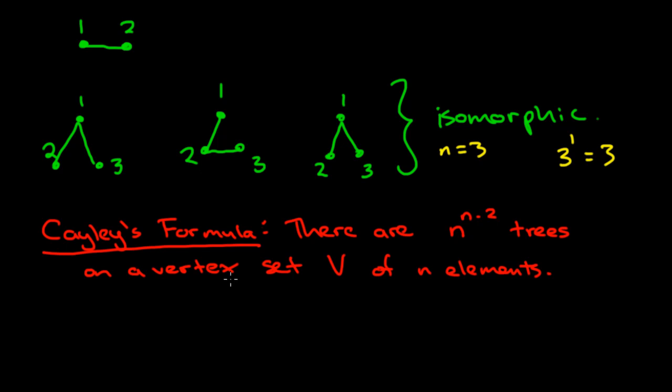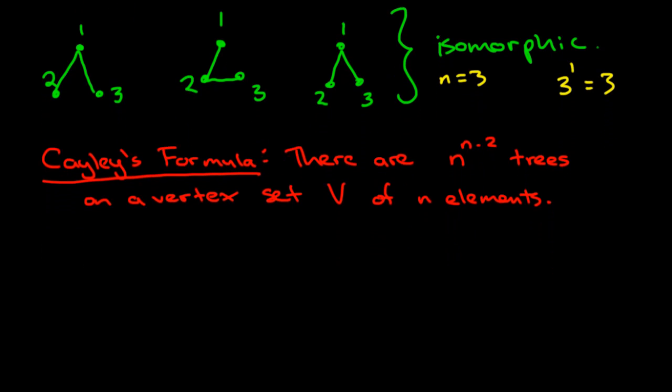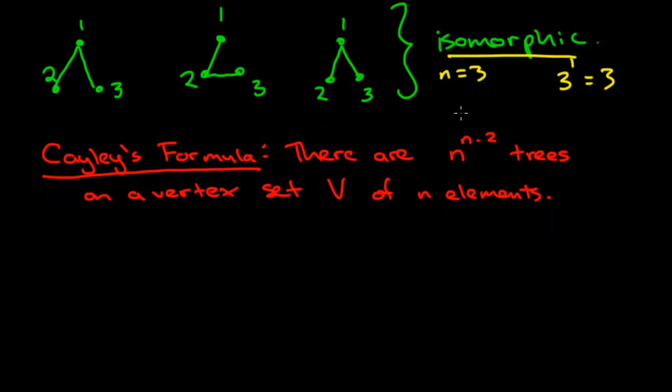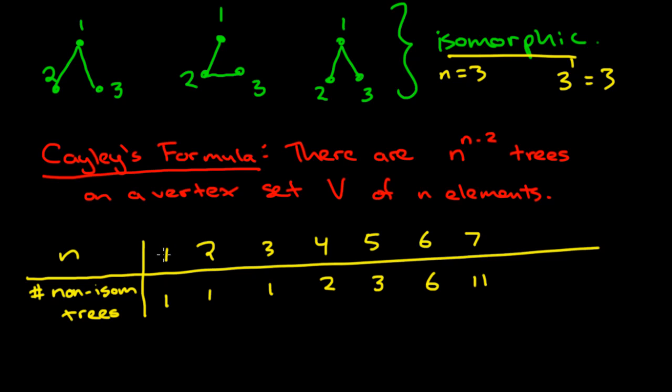So this tells us that there are certainly many, many, many trees on a given set of elements. But when we want to know how many trees are there in terms of isomorphism, we can take a look at this following table. On only one vertex, we only have one non-isomorphic tree. It's just a single vertex without any edges. With two vertices, we have just the simple path on two vertices. With three vertices, there's only one non-isomorphic tree on the three vertices. These are the three labeled trees on three vertices, but we saw that they're all isomorphic. They're all just a path of length two. So that gives us one non-isomorphic tree when we have three vertices.